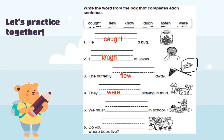Number four: 'They ___ playing in mud.' Can you see these two puppies? Do we say 'they listen playing in the mud' or 'they were playing in the mud'? They were playing in mud — perfect! Number five: 'We must ___ in school.' Do we say 'we must listen in school' or 'we must know in school'? We must listen in school — that's perfect!